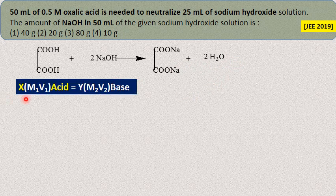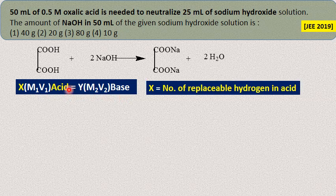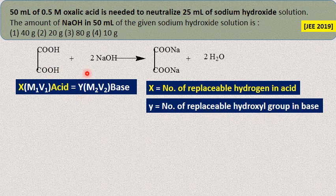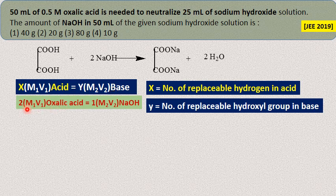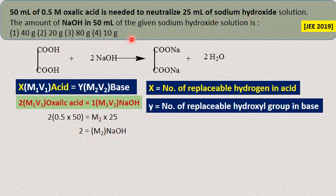The simplest formula is: X × M₁V₁ (acid) = Y × M₂V₂ (base), where X is the number of replaceable hydrogen ions in the acid and Y is the number of replaceable hydroxyl groups in the base. Substituting the given values and simplifying, the molarity of NaOH is found to be 2 molar. Note: 25 ml of NaOH was used for neutralization, but the question asks for the amount in 50 ml — so read the question carefully.